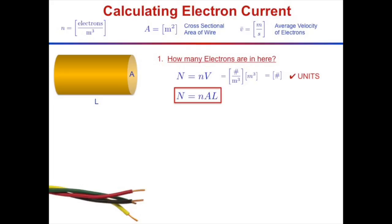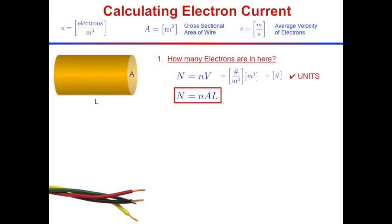Let's calculate the electron current in terms of little n, A, and V. Take a chunk of wire of length L and cross-sectional area A — part of a larger wire carrying current. The volume of this chunk is A times L.